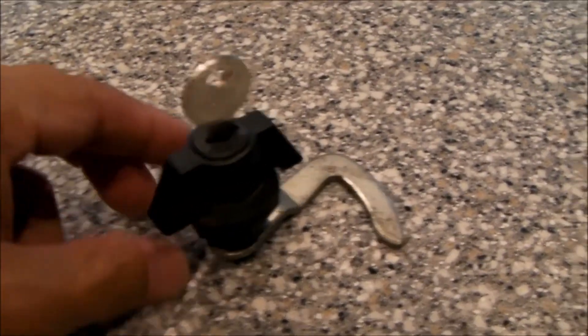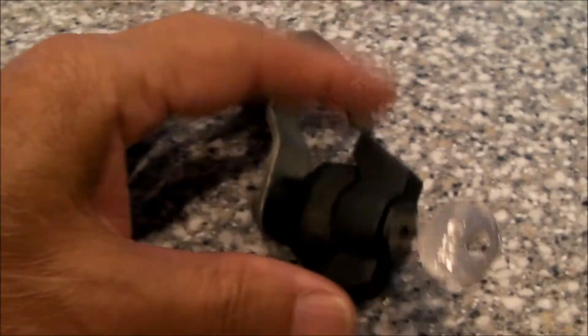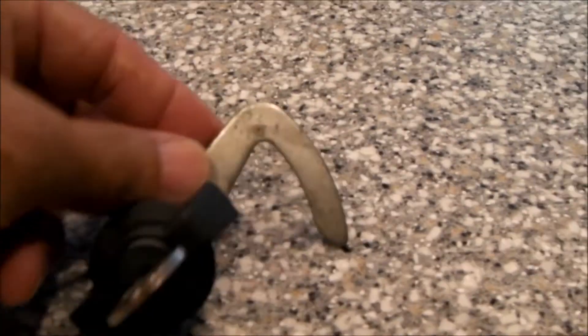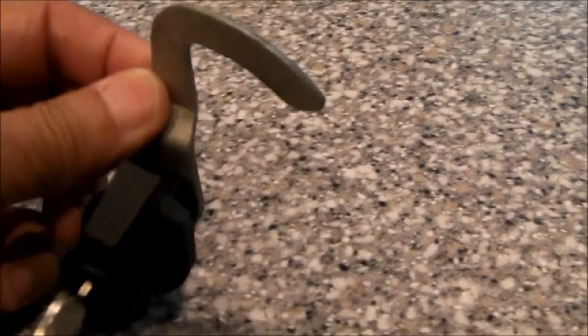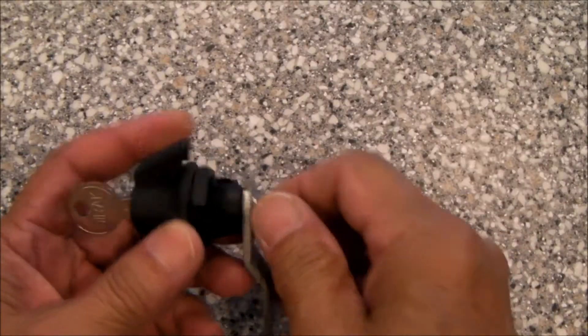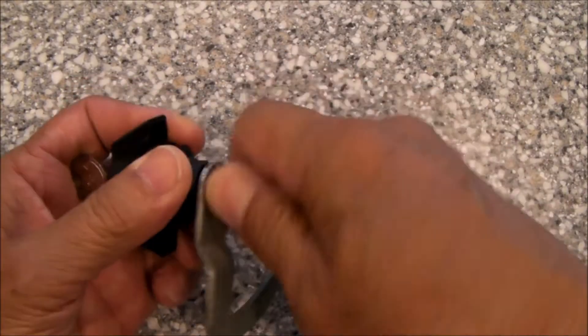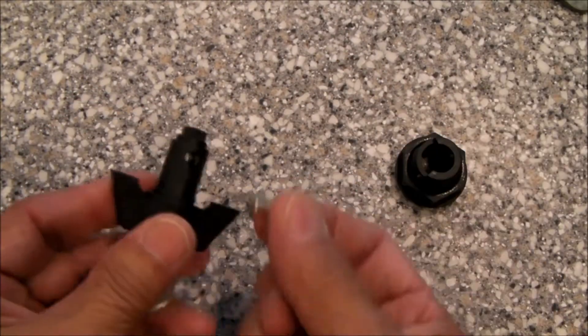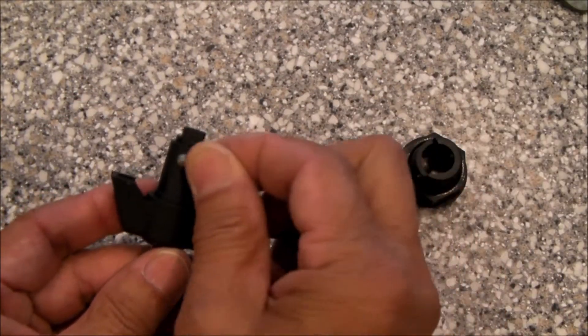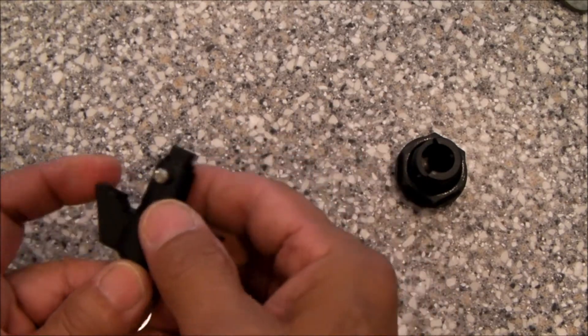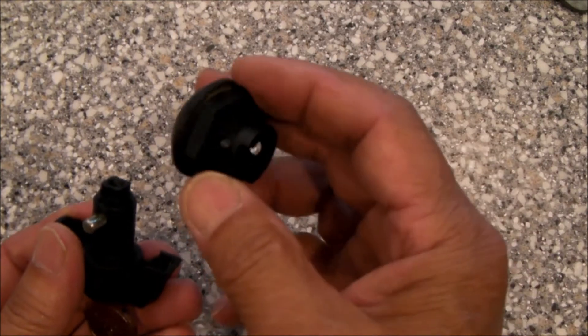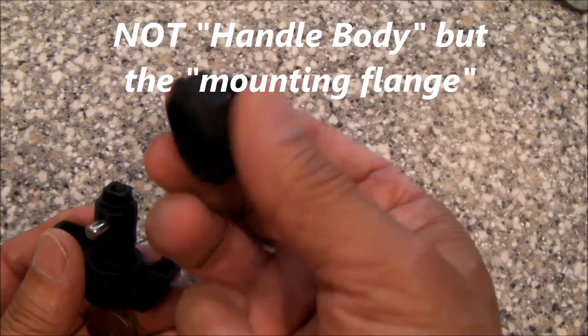I've removed the old lock. Here it is. Looks like just a standard off-the-shelf cam lock with this locking arm attached to it. So let me remove the locking arm. The way this lock works is this steel pin rides inside of this hole. The steel pin goes up and down and engages through the holes of the handle body.